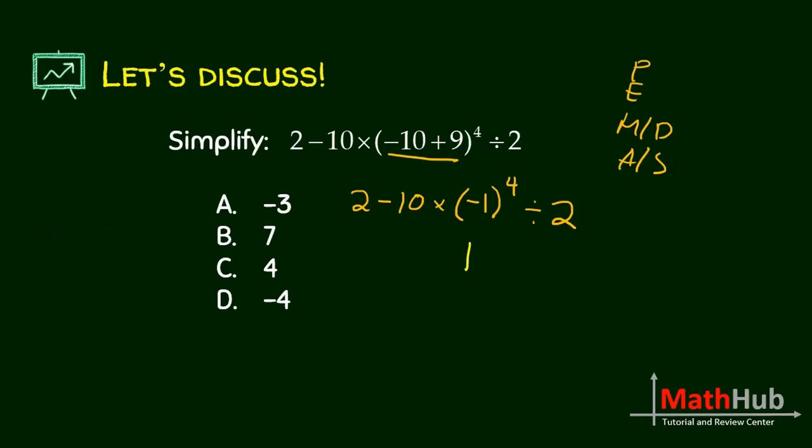Let us continue with this one. What are the operations that we have left? Subtraction, multiplication, and division. Which operation are we going to perform first? Multiplication, because multiplication came here first before division. So we're done with P, E. We're now here, multiplication or division. So 2 minus 10 times 1 is 10.